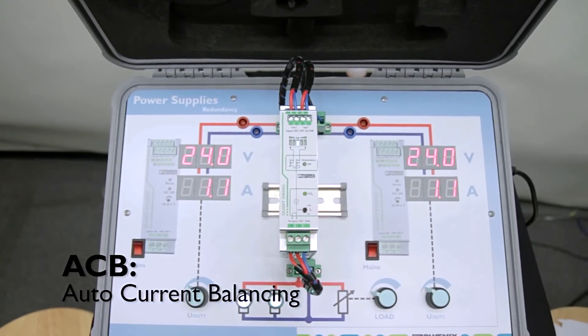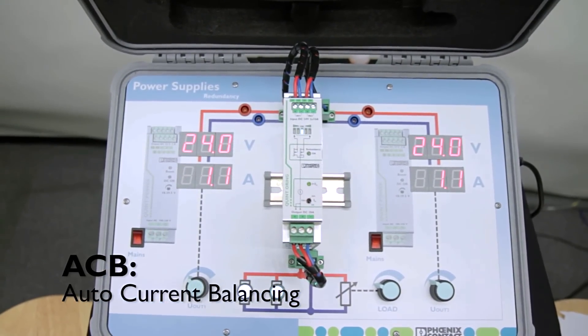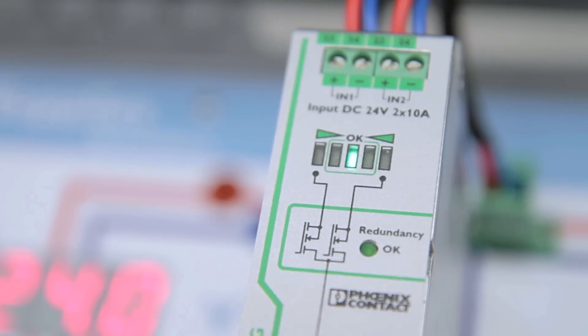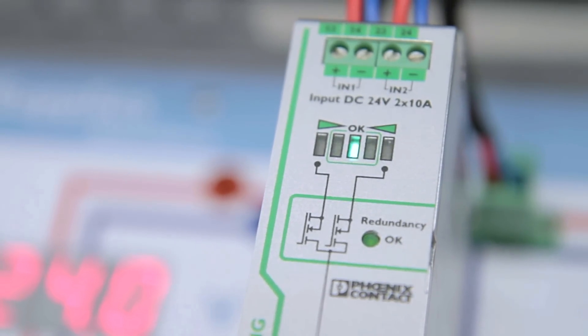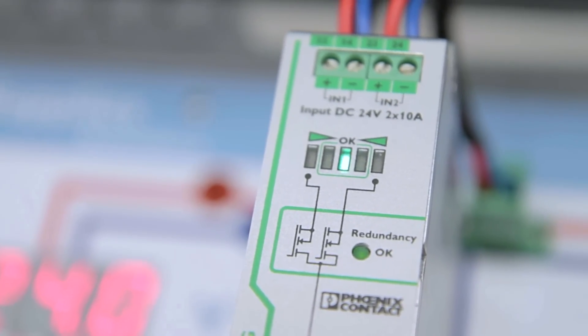The Quint O-Ring modules use Auto Current Balancing, or ACB, technology to ensure the power supplies are load sharing evenly. When power supplies are load sharing evenly, they run cooler and double the lifetime of the power system.